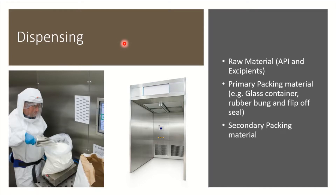The initial process is dispensing, where the adequate amount of material mentioned in the BMR — batch manufacturing record — is obtained. This material can be raw material, primary packing material such as glass containers, rubber stoppers, and flip-off seals, or secondary and tertiary packing materials.